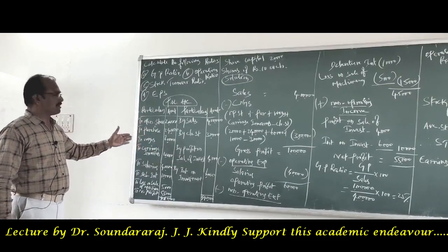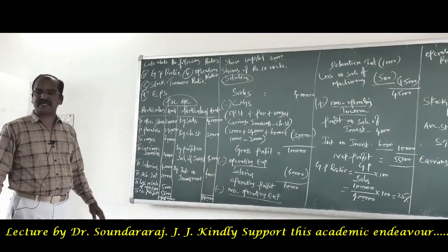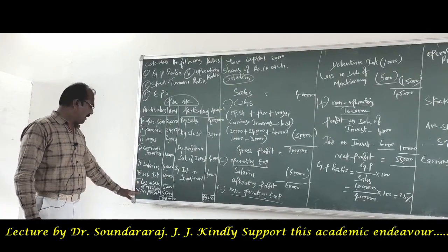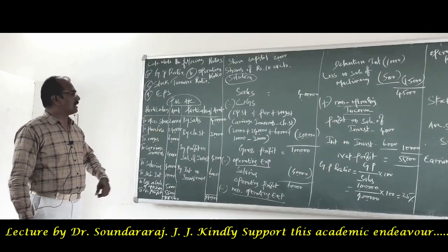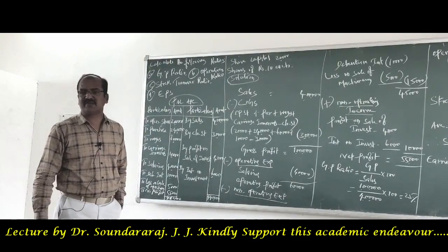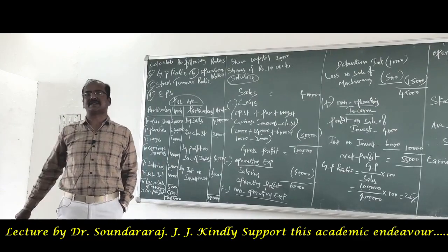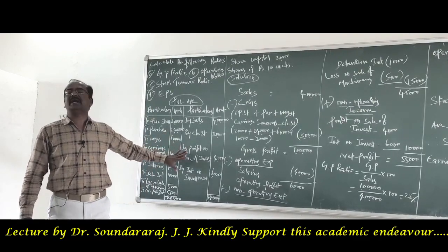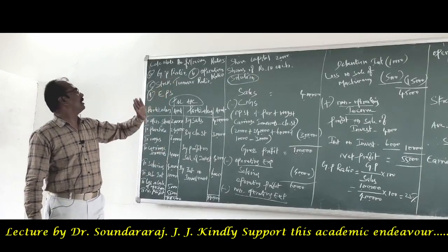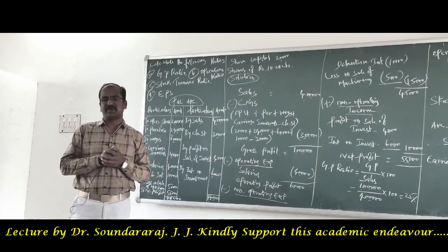We find the debit items like opening stock, purchases, wages, carriage inwards, salaries, debenture interest paid, loss on sale of machinery, and net profit. On the credit side, we find items like sales, closing stock, profit on sale of investment, and interest on investment. From the details given in the profit and loss account, we are asked to calculate GP ratio, operating ratio, stock turnover ratio, and earning per share.